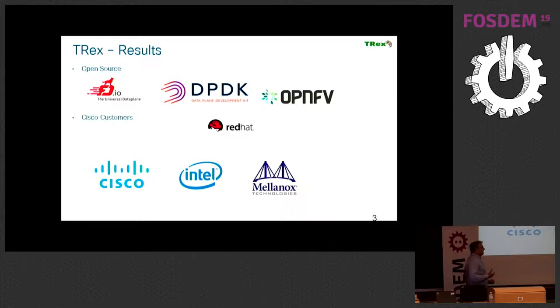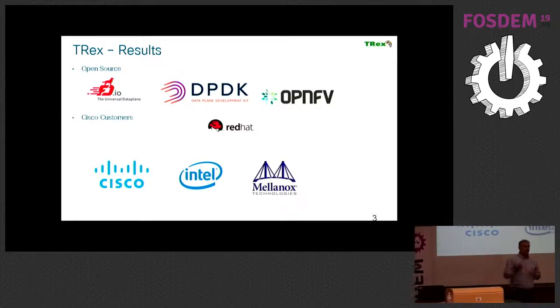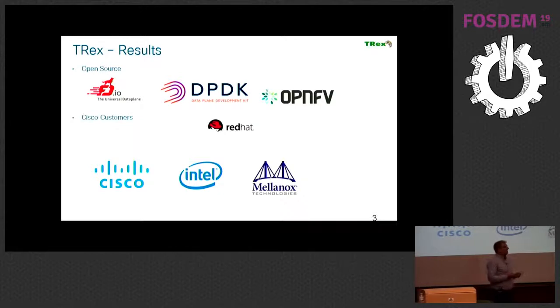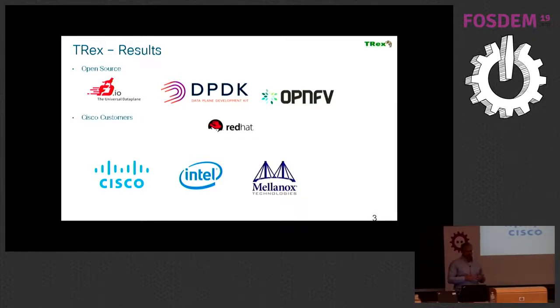Let me start with the result. After we open sourced the traffic generator, it seems many had the same problem. Many needed a traffic generator to test their routers. For example, many open source projects started to use TRex, like OpenNFV, DPDK, FD.io, Cisco internally, and many things in Cisco, Intel, Mellanox, and Red Hat.